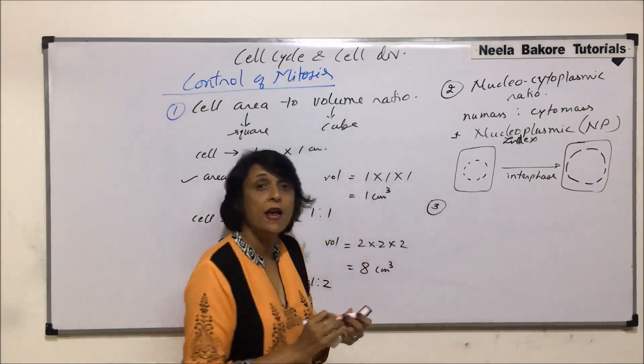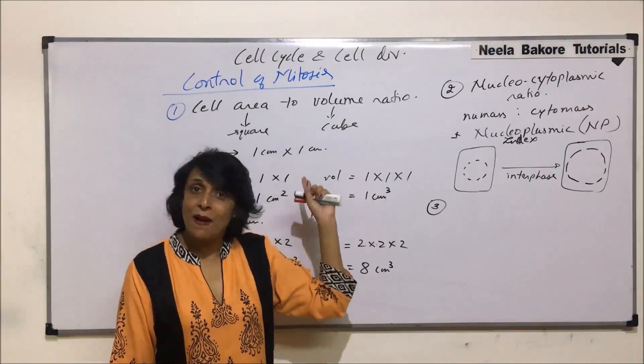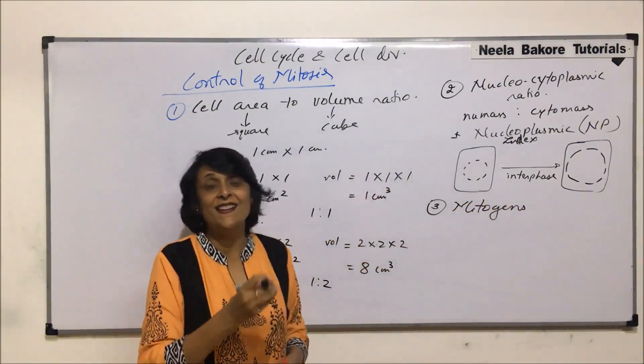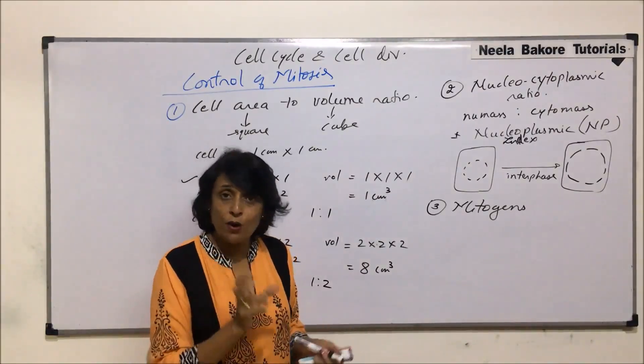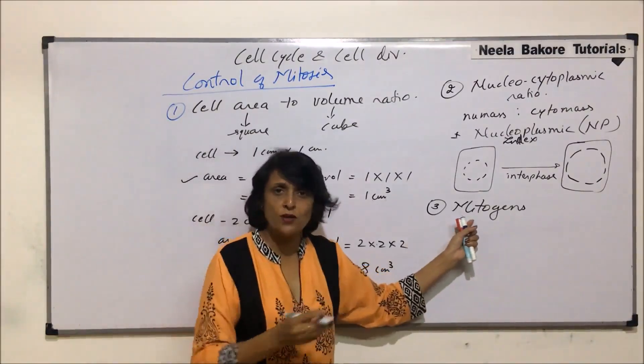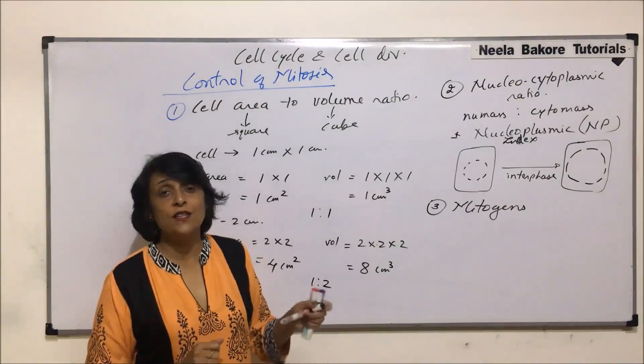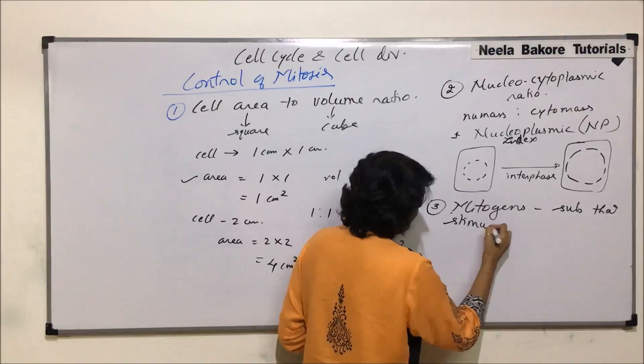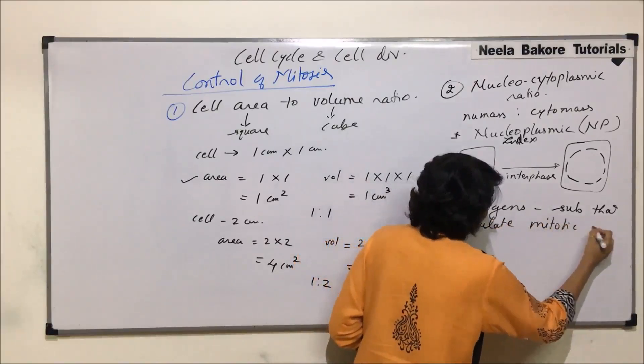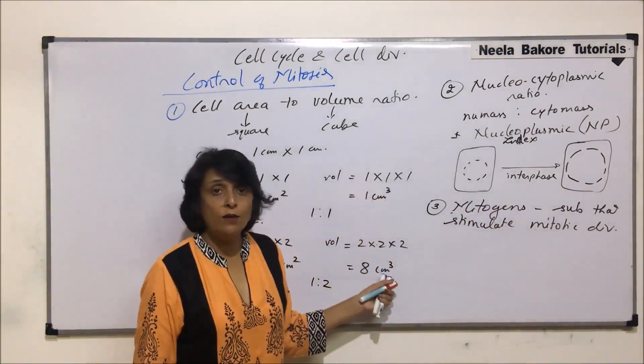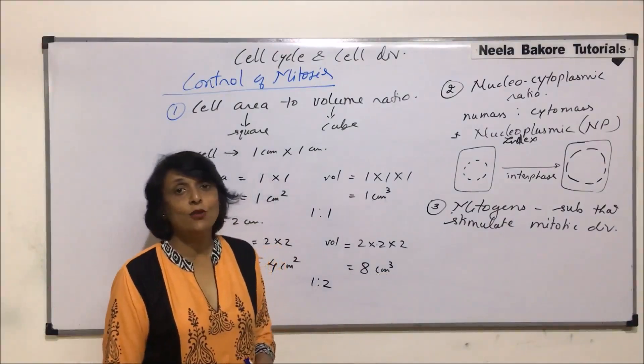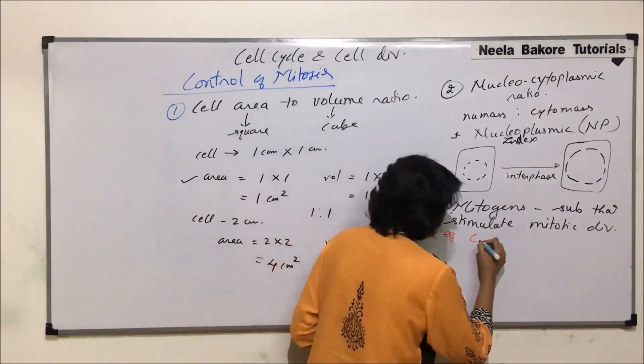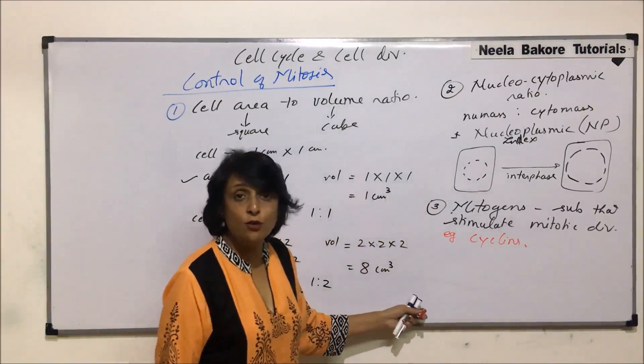One more thing which we will be discussing here are certain substances which trigger the mitotic division. Those substances are known as mitogens and the substances when they trigger this process of mitosis, we call that or that process as mitogenesis or the process continues. Which are those substances which are considered as mitogens? Substances that trigger or stimulate mitotic division. They are the mitogens. We talked about a substance when we were talking of cell cycle. And those substances they are proteins and they are known as cyclins. So here when we use the examples of mitogens, cyclins, they are considered as mitogens. They trigger mitosis.